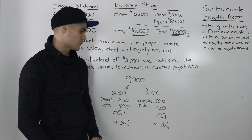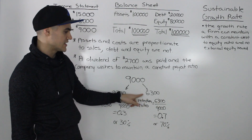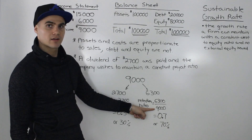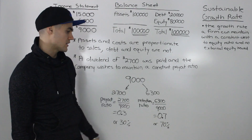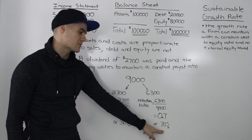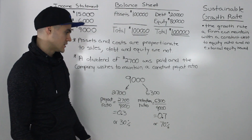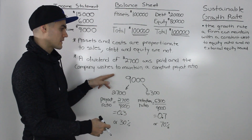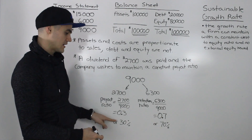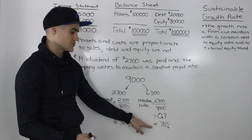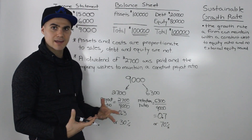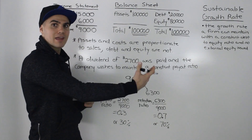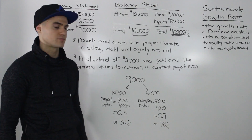Similarly, for the retention ratio, we take the retained earnings of $6,300, divide it by the net income of $9,000, and we would get 0.7, or 70%. So all of the company's net income — 30% is paid out as a dividend, 70% is retained in the company for growth — and the company wants to maintain those ratios in the future.